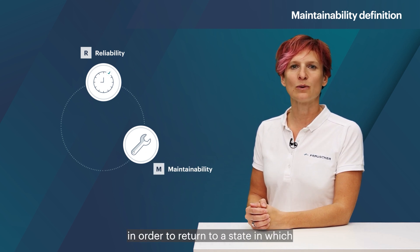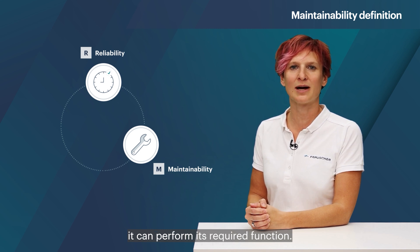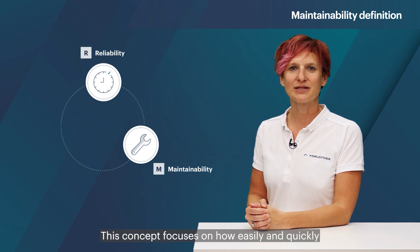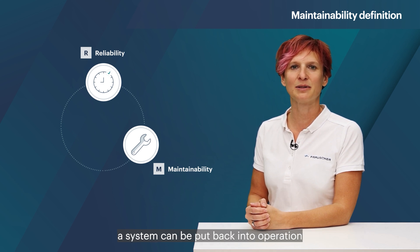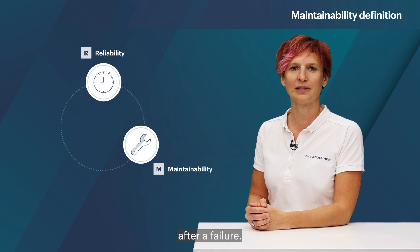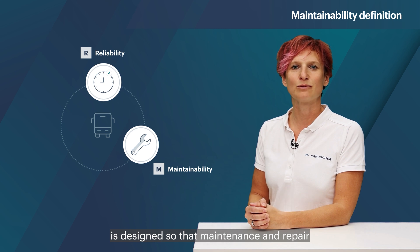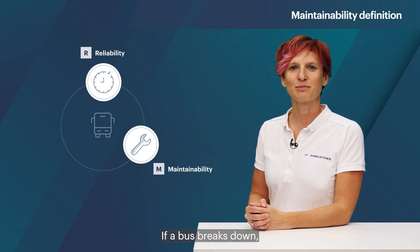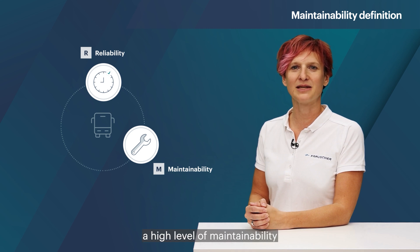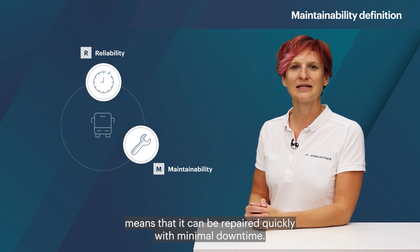Maintainability refers to the ability of a system to be serviced, repaired or replaced in order to return to a state in which it can perform its required function. This concept focuses on how easily and quickly a system can be put back into operation after a failure. A maintainable city bus, for example, is designed so that maintenance and repair work can be carried out quickly and efficiently. If a bus breaks down, a high level of maintainability means that it can be repaired quickly with minimal downtime.